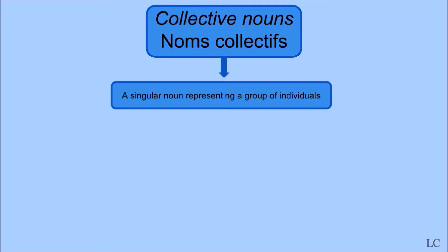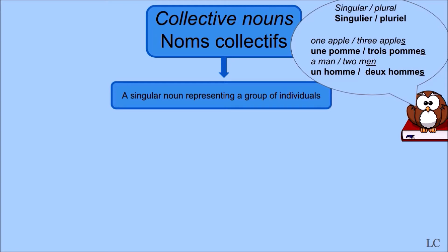The last category we're going to talk about today is collective nouns, nom collectif. A collective noun is a singular noun representing a group of individuals. If you're not too sure what singular and plural mean, just remember that a noun representing a single thing, like one apple, une pomme, is singular. But when there are several apples, for example three apples, trois pommes, it's plural. Plural nouns usually take an S in French.